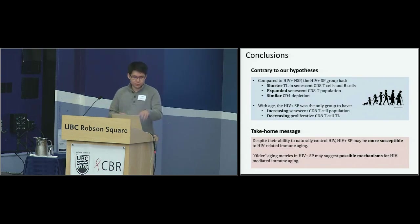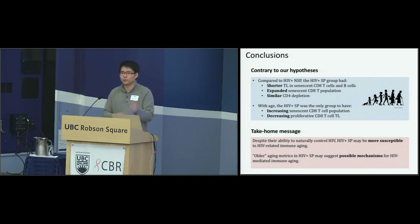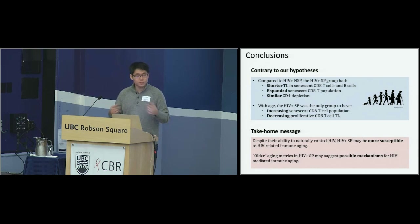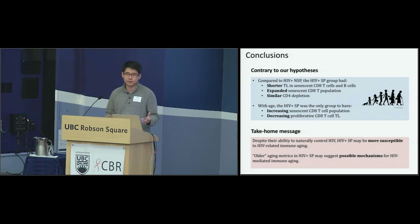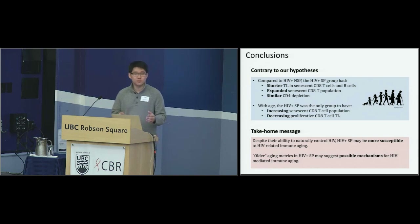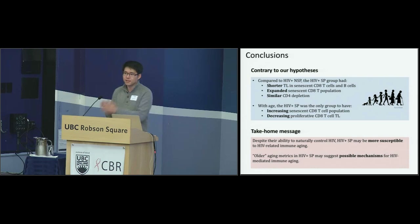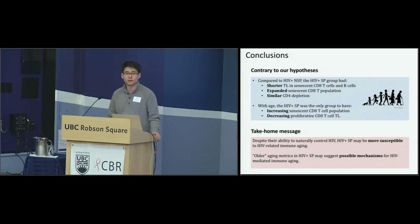In conclusion, every single time we look at something within cellular immune aging, it's always the case that slow progressors are worse than non-slow progressors within the HIV-positive group. Contrary to what we thought, slow progressors are actually worse at protecting against the accelerated immune effects of HIV compared to non-slow progressors. What this means is that we have an unfettered look at what happens with HIV mediating accelerated aging if the antiretrovirals weren't inhibiting HIV disease progression.